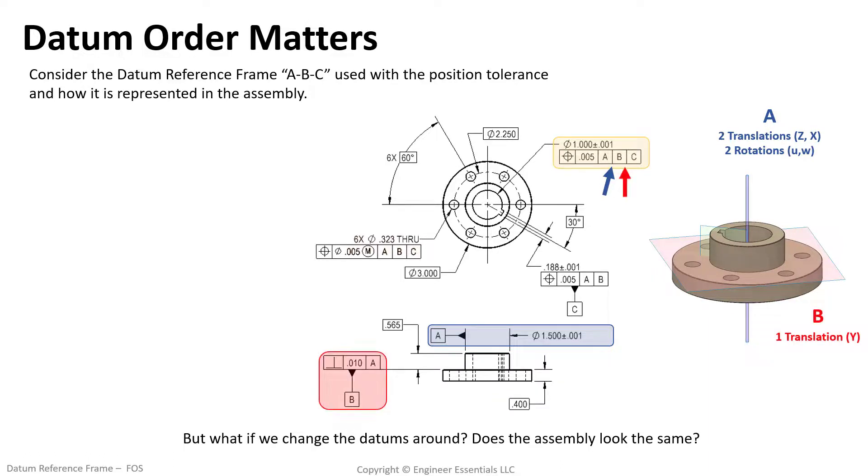Next datum feature B is the plane. It will only lock down one degree of freedom, a single translation. And lastly datum C will once again lock in that last rotational degree of freedom to help us time other features.